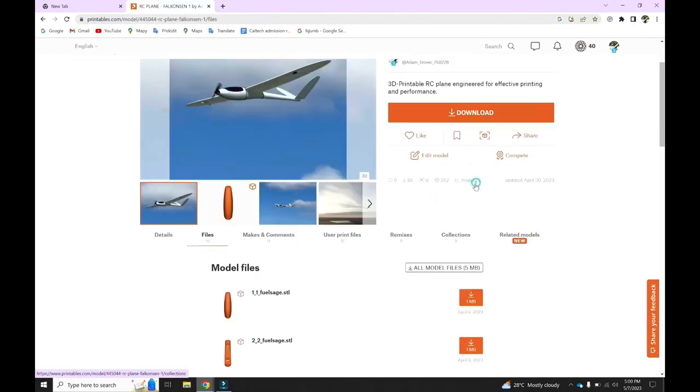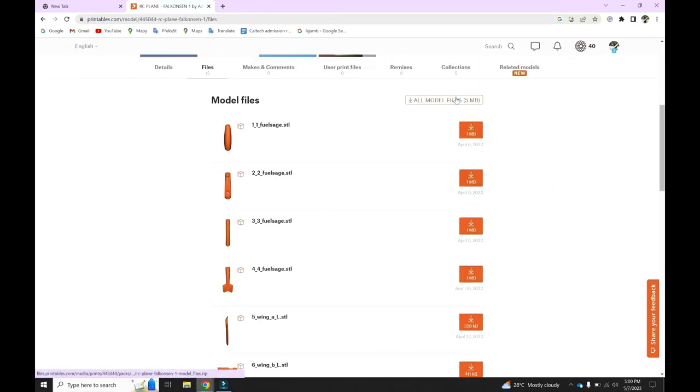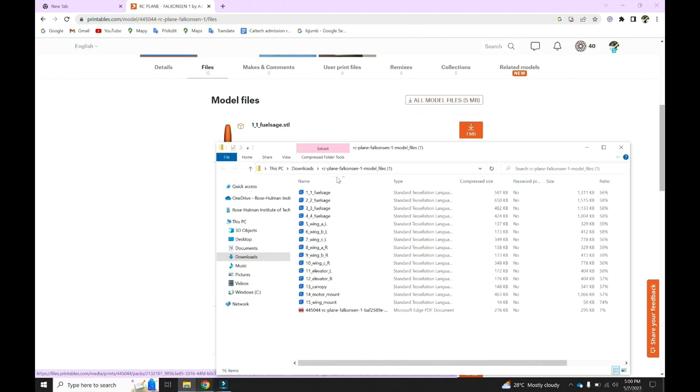To start a build of the Falconsen 1, we will need to download the STL files from an online platform like Printables, Thingiverse, or Cults 3D.